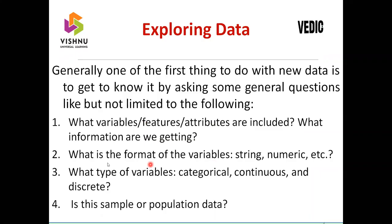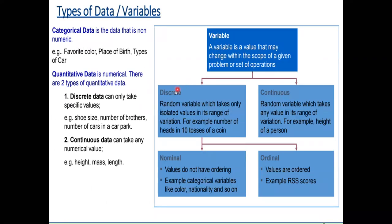Now let's go to data types. A variable can be either discrete data type or continuous data type. Underneath discrete, it could be nominal data type or ordinal data type. If a variable or attribute is of discrete data type - nominal - nominal always will have a name. For example, nominal data type can include blood group, or labels like good, average, excellent.